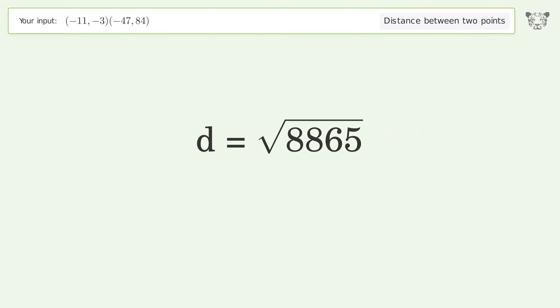And so the distance between the two points is the square root of 8,865 or 94.154.